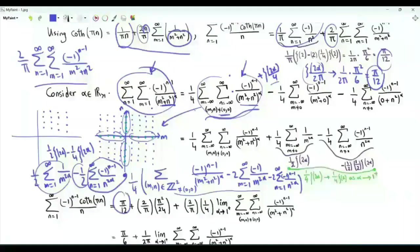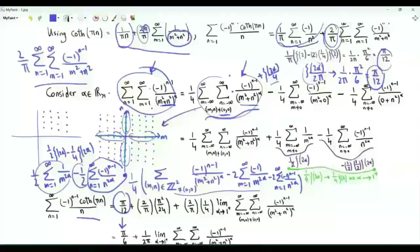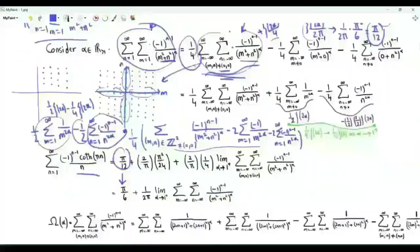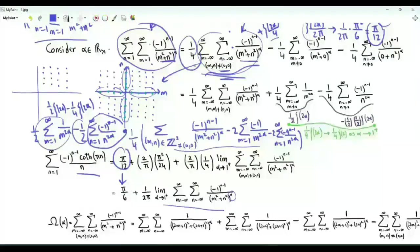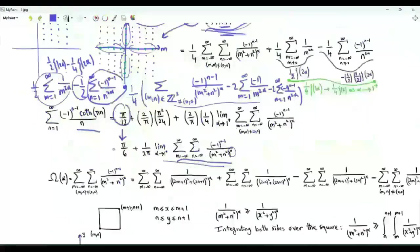We have π/12 and π/12, giving the sum of interest equal to π/6, plus 2/π times 1/4 times this double sum. We need to take the limit of this double sum, which is a function of α, as α approaches 1 from above.